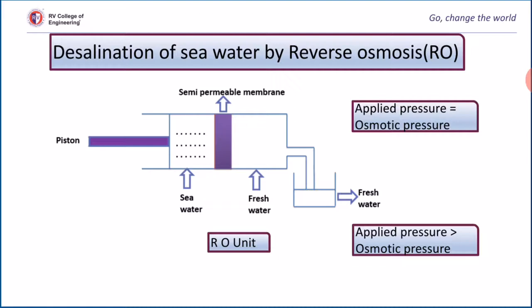The picture shows a typical reverse osmosis unit. It consists of two different compartments containing two different concentration solutions separated by a semipermeable membrane. This membrane is made up of cellulose acetate, polyurethane, or polysulfone, and it allows only solvent molecules to pass through. When applied pressure is equal to osmotic pressure, there is no movement of solvent molecules across the membrane. But when you apply pressure using a piston greater than the osmotic pressure, there is movement of solvent molecules towards the lower concentration, leaving behind salts.